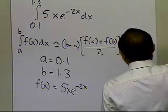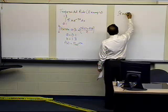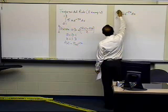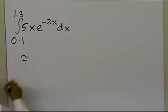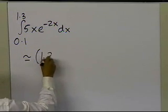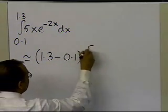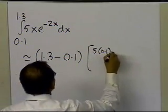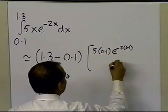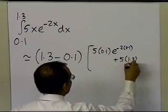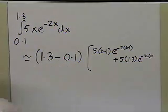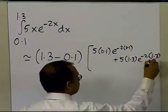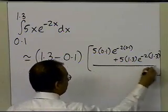So the integral of 5x e to the power minus 2x dx, going from 0.1 to 1.3, is approximately equal to b minus a, which is 1.3 minus 0.1, times the value of the function at a, which is 5 times 0.1 times e to the power minus 2 times 0.1, plus 5 times 1.3 times e to the power minus 2 times 1.3, divided by 2.